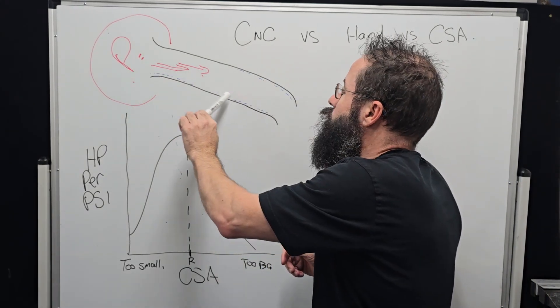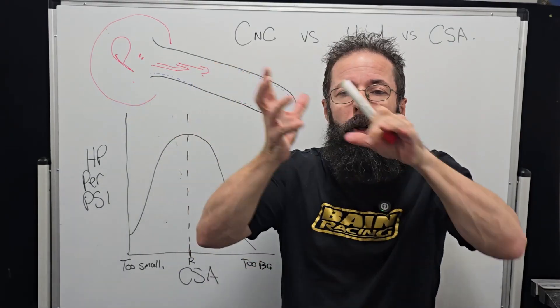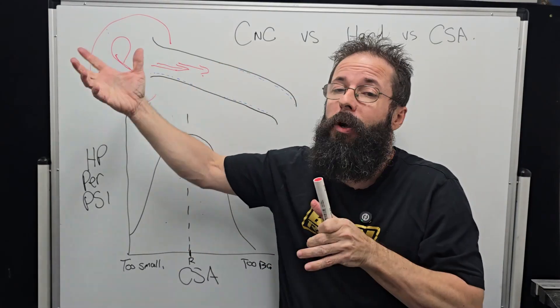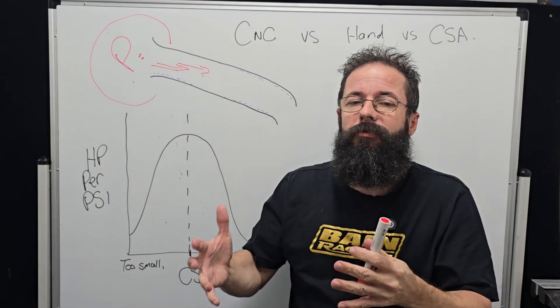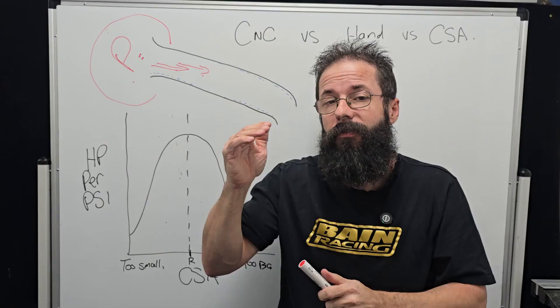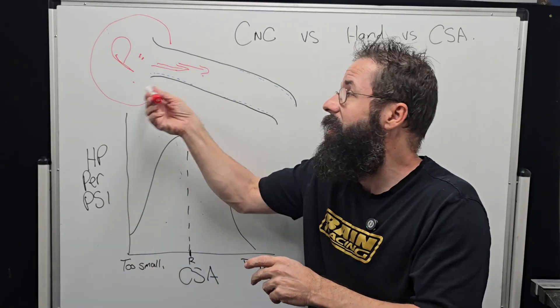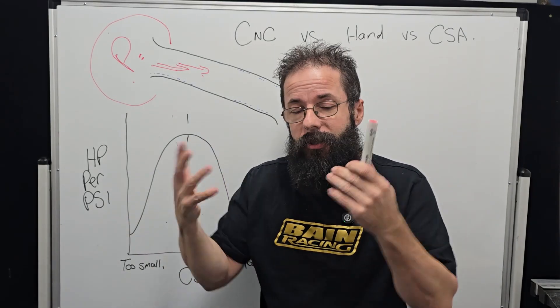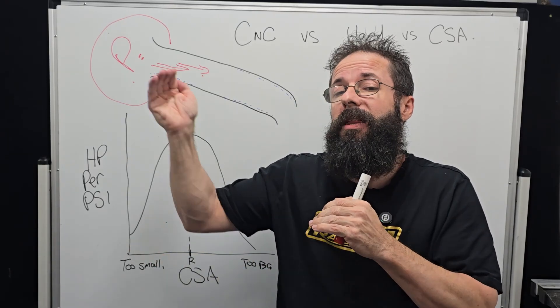But until this velocity here starts to move, we're just measuring restriction. This is why a better-shaped induction moves air quicker—it moves those molecules out of the way so that boost pressure can now fill back in behind it. This is where we see massive changes in our pressure differential and horsepower per PSI.